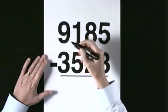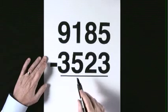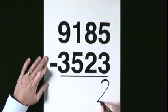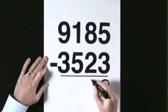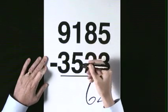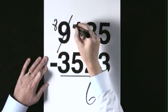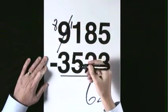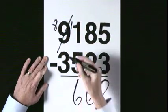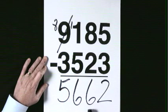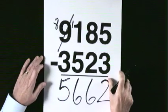9,185 subtract 3,523. 5 take 3 is 2. 8 take 2 is 6. 1 take 5 is not possible, exchange from the 9. 9 becomes 8, 11. 11 take 5 is 6. 8 take 3 is 5. The answer is 5,662.